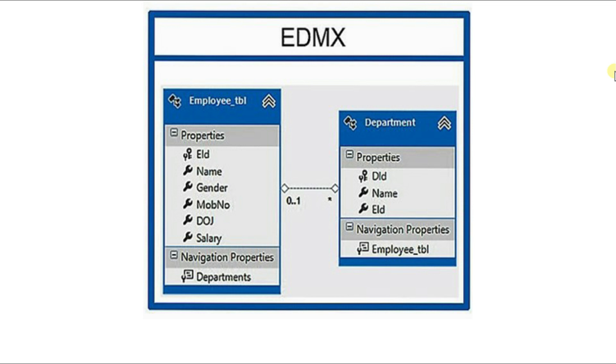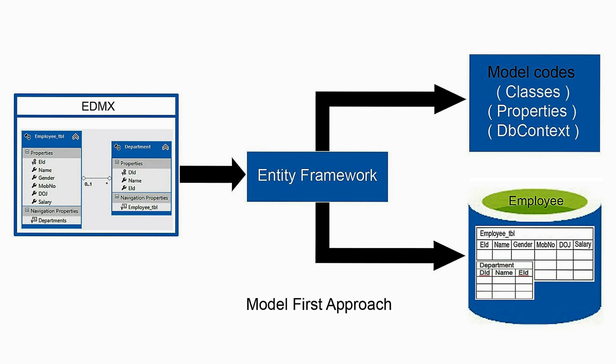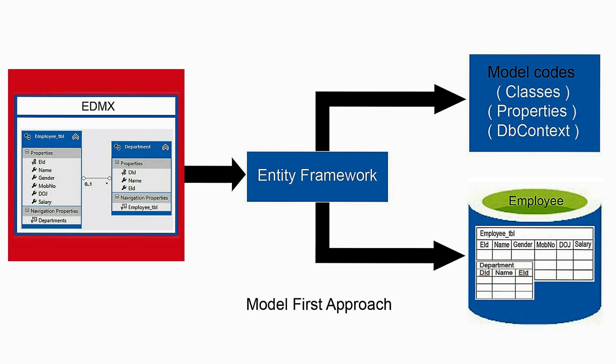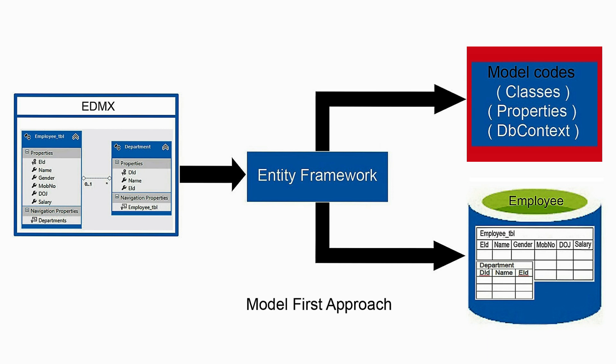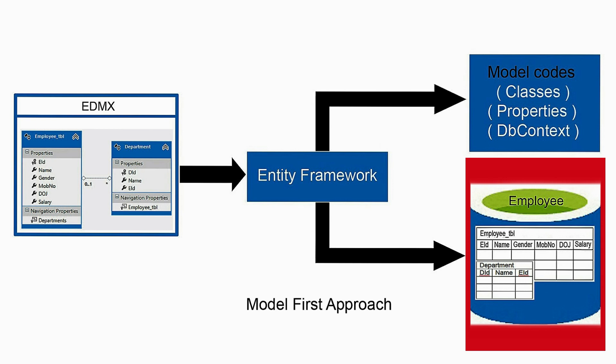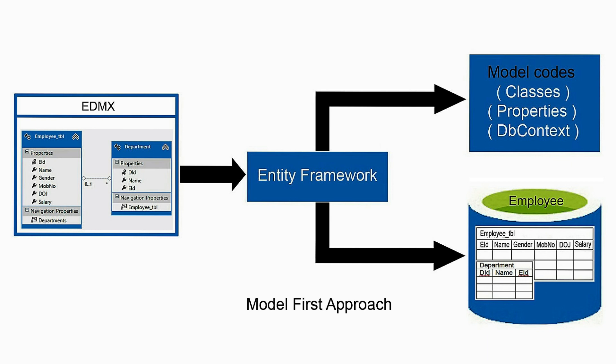Let me explain with a diagram which will help you understand better. On the design surface of EDMX, first we create entities — that is tables and their relationships — and based on these entities, Entity Framework will create model codes: that is classes, properties, and DB context, and also create the database and tables in SQL Server. Through this visual design, the Entity Framework model first approach creates both model codes and the database.